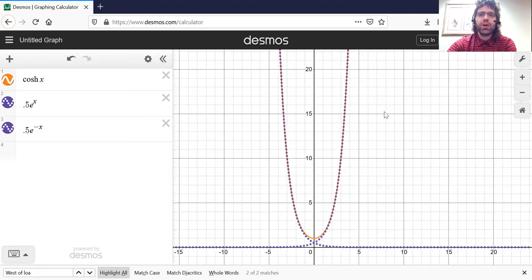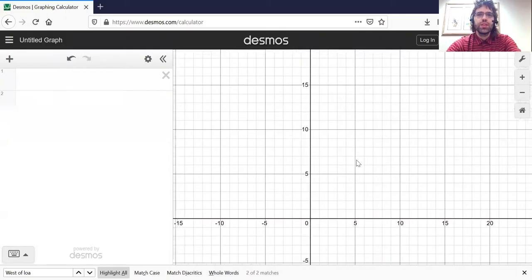So that's the hyperbolic sine and the hyperbolic cosine, the sinh and the cosh. The hyperbolic tangent.